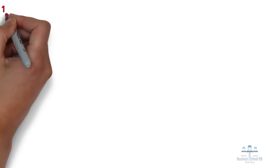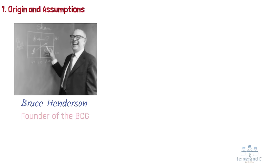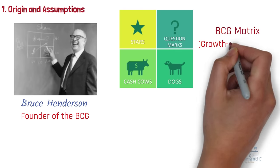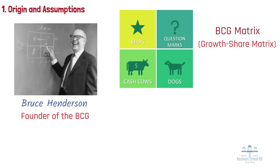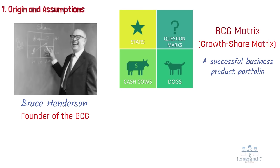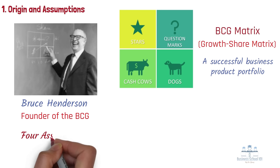Section 1: Origin and Assumptions. In the 1970s, Bruce Henderson, founder of the Boston Consulting Group, came up with the BCG Matrix, also called the Growth Share Matrix, which would look at a successful business product portfolio based on potential growth in market shares. According to the product portfolio theory, it's fundamental to look at cash flows to build up a successful portfolio, and this is based on four primary assumptions.